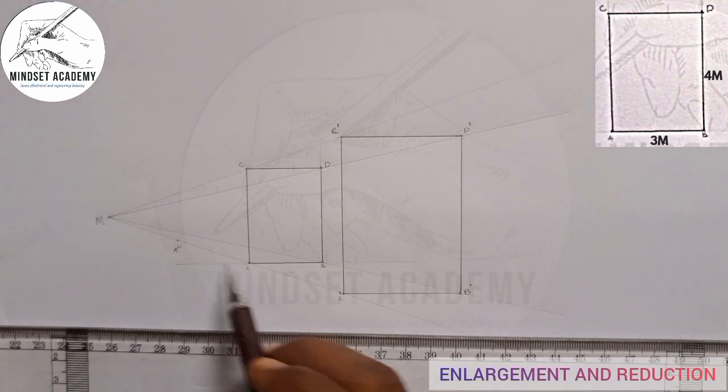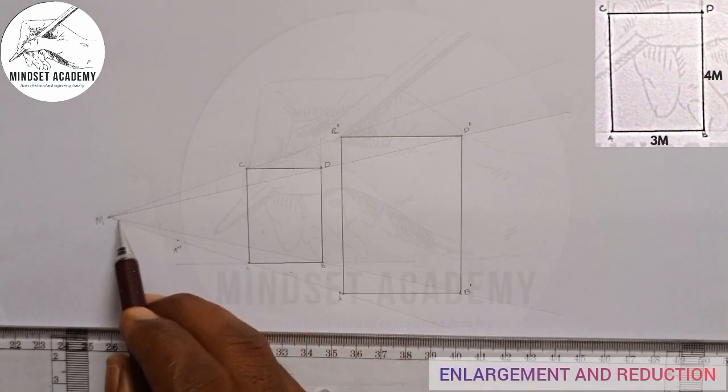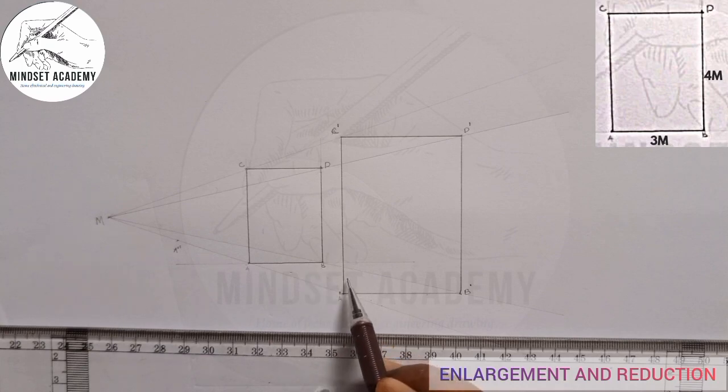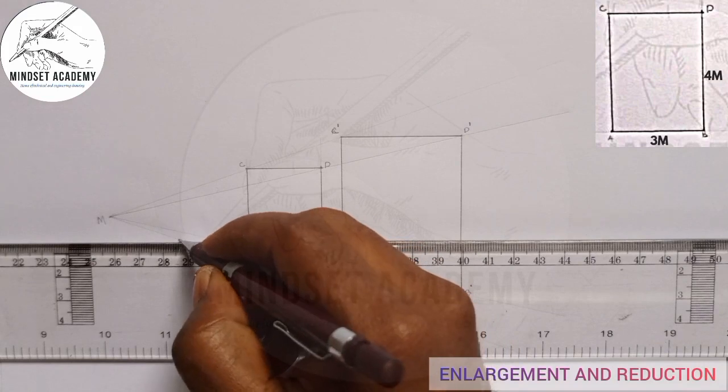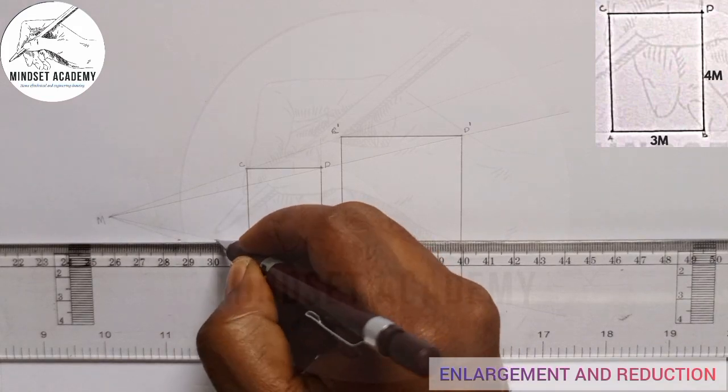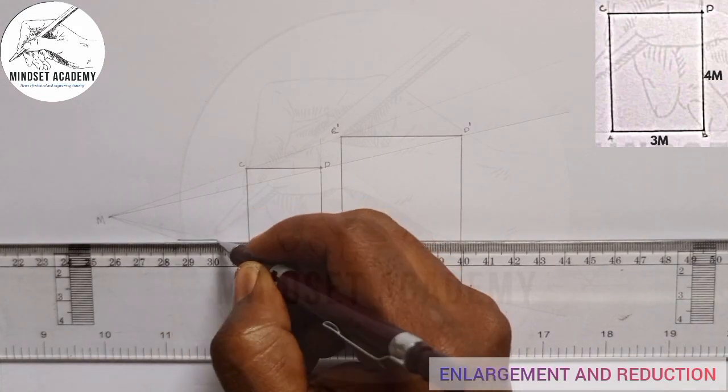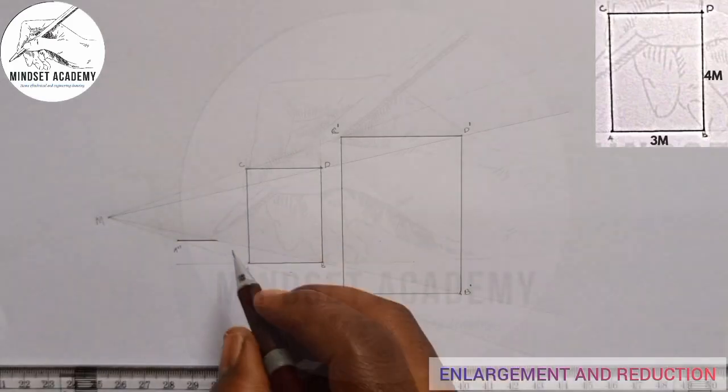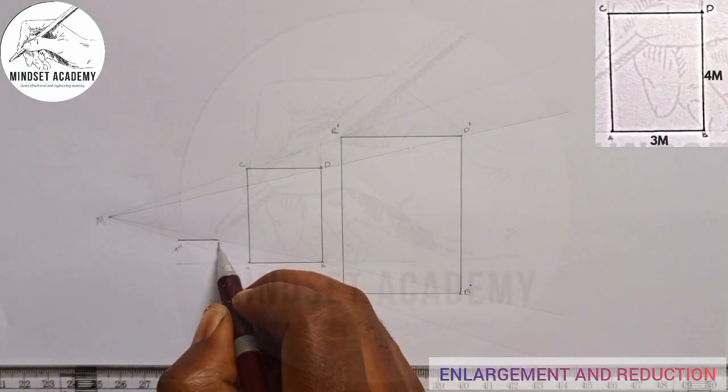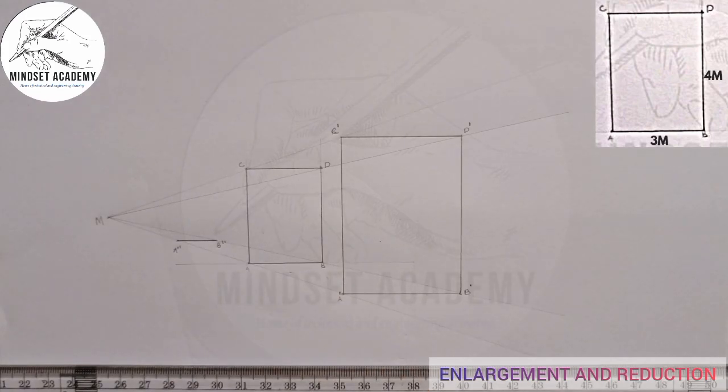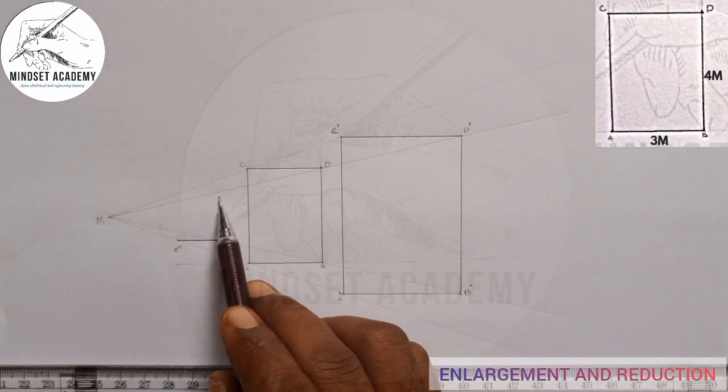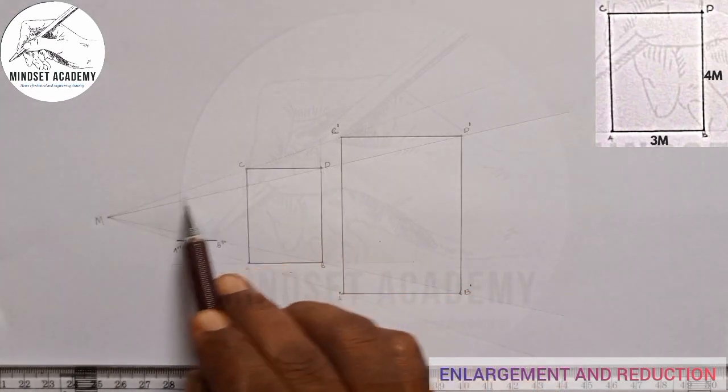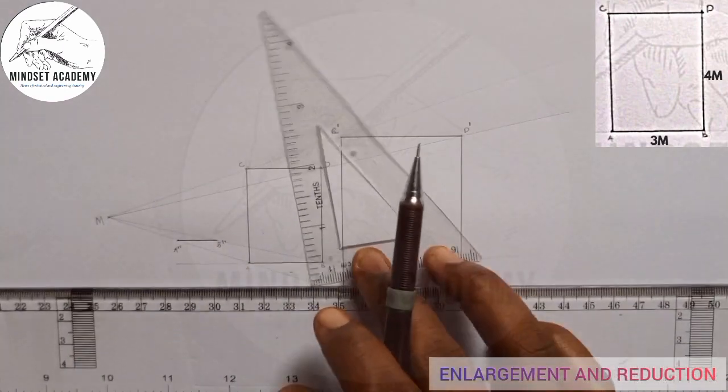So I want to reduce the size from A to the next point, A to B. This is the line of B here. I'll just take my T square and move from here. This is A to B prime prime. And the next one, B to D. This is the line of D. I'll just move this to the line of D.